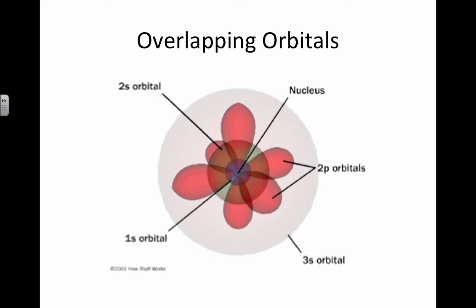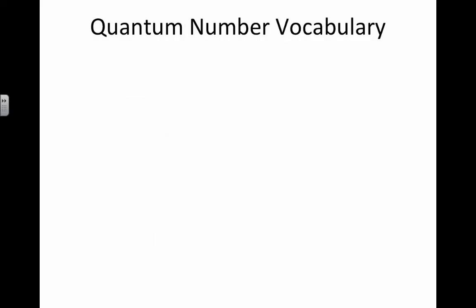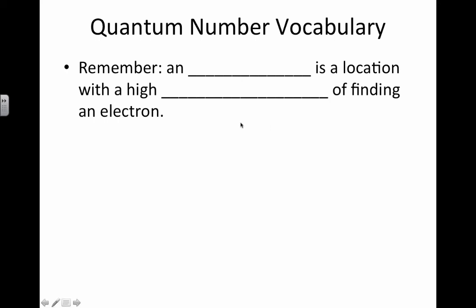And then the orbitals are going to overlap a bit. As we add more and more electrons to the space around an atom, the overlap increases, and they get more complicated where the electrons are. So remember, here's our vocabulary.